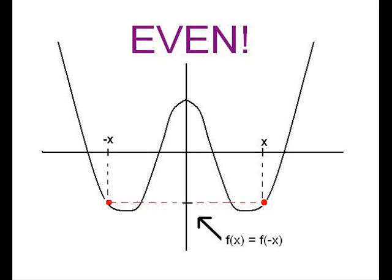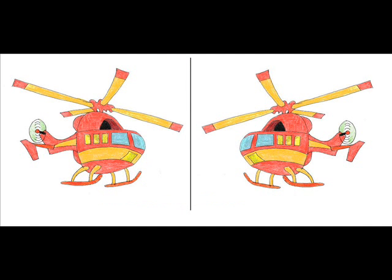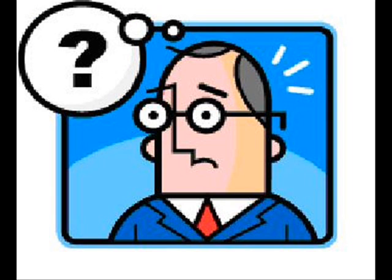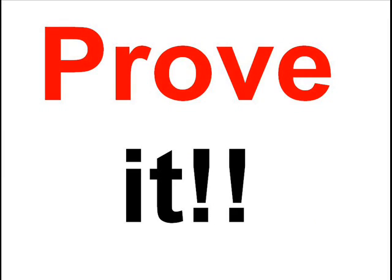Even functions are symmetric to the y-axis, you can reflect it. Odd functions are symmetric to the origin — there's only one thing. That's just a guess, ain't proved nothing yet.